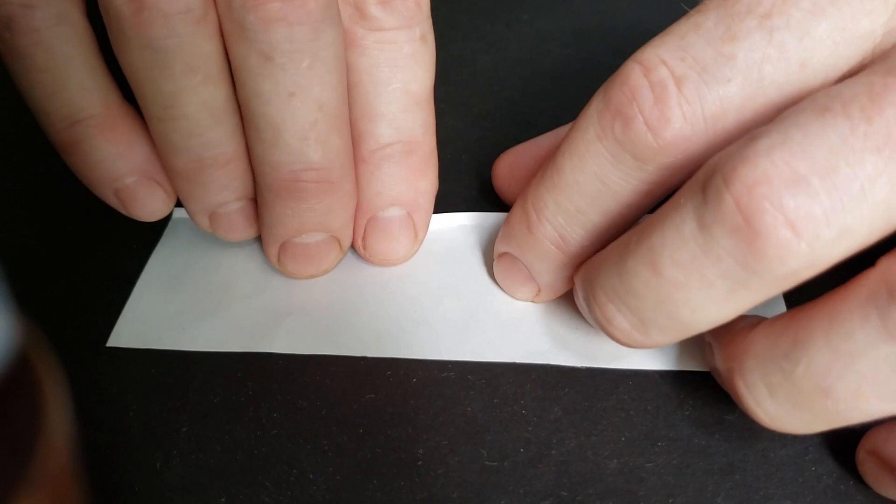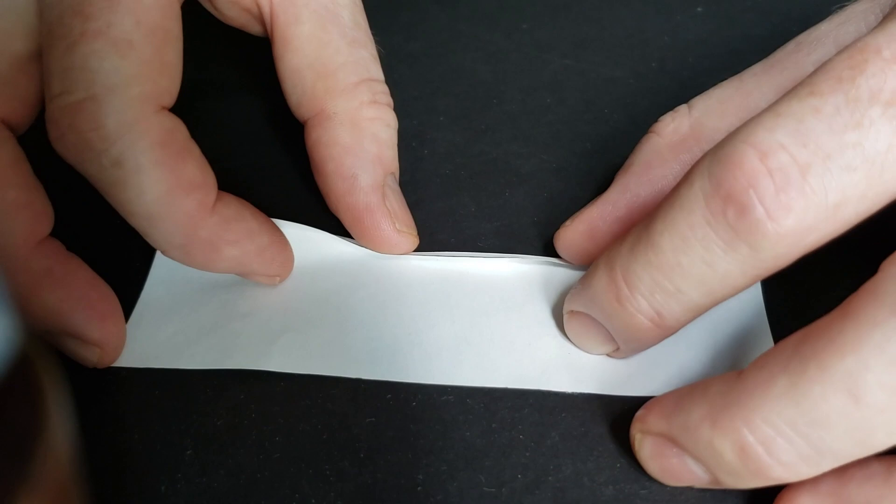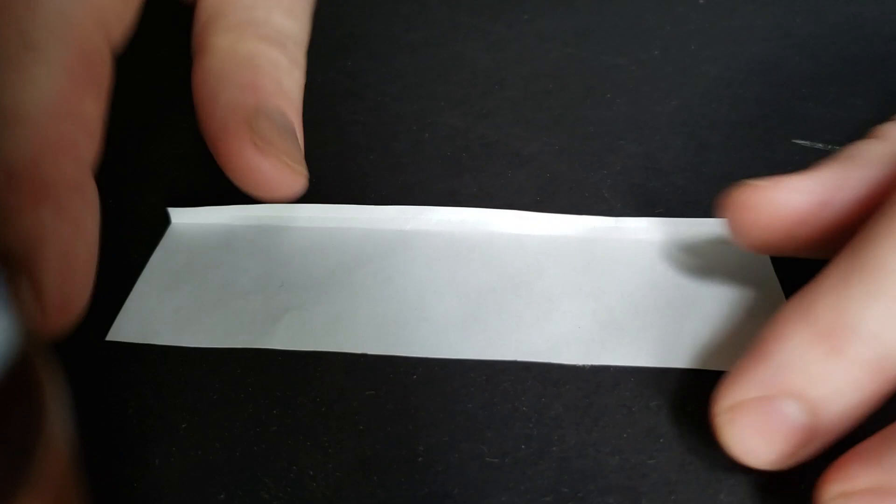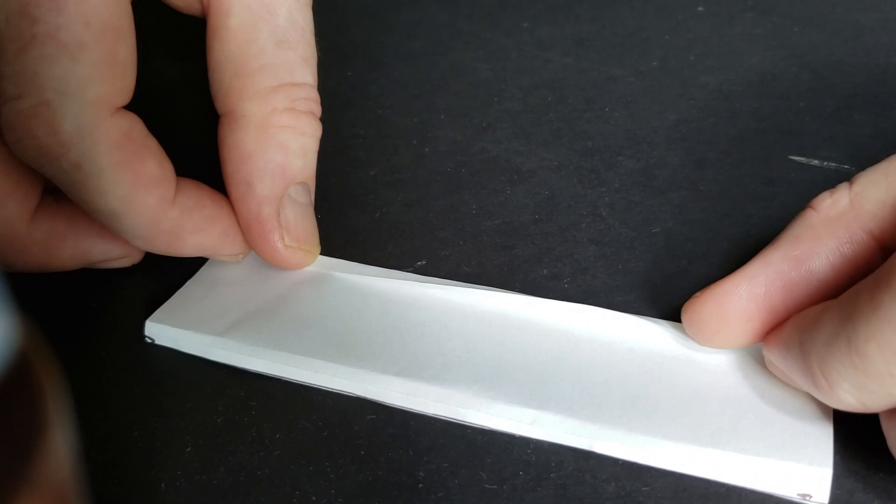To fold the glider, take one of the rear edges, fold it up just a little bit, and then fold it all the way across from one end to the other. Then turn it over and do the opposite edge in the opposite direction. So one goes up and one goes down.